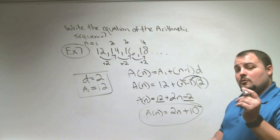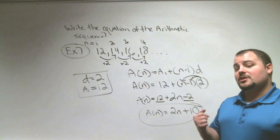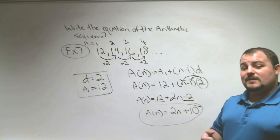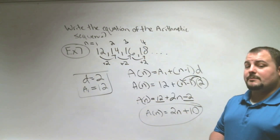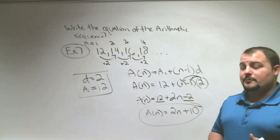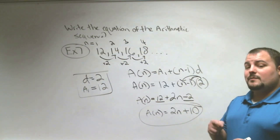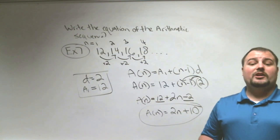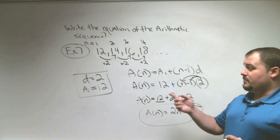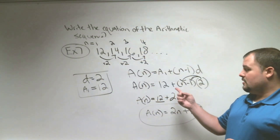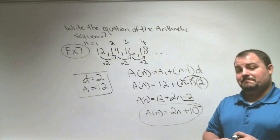That's it for today's lesson. I hope you got the three goals. One: establish if it's an arithmetic sequence. Two: figure out the next three numbers. Three: write the arithmetic equation. Remember, you only have to replace two things in the equation — replace A1, replace D, distribute, and you're done.